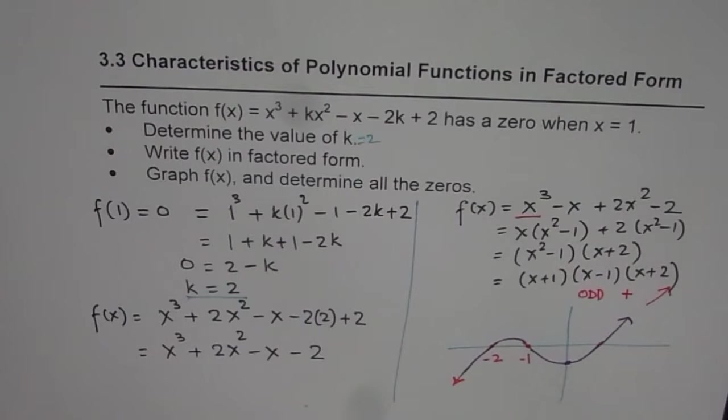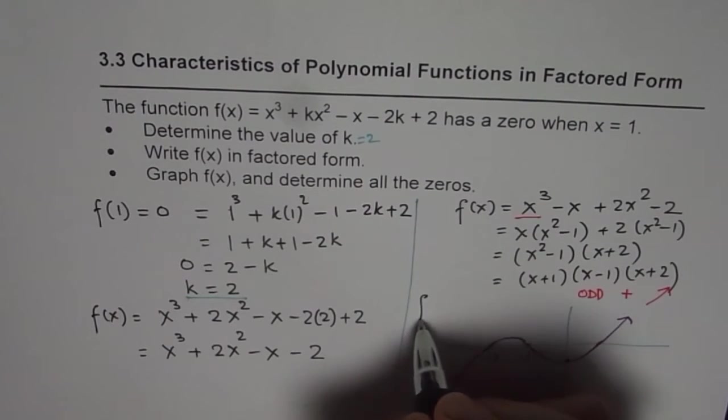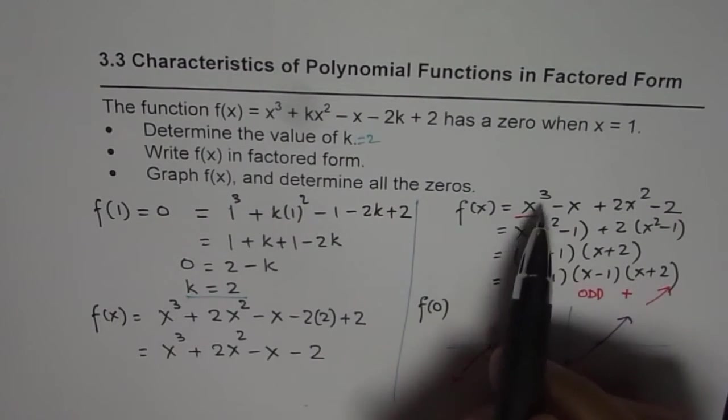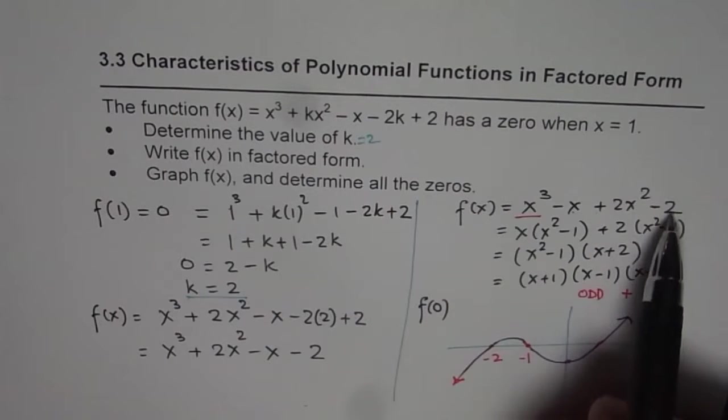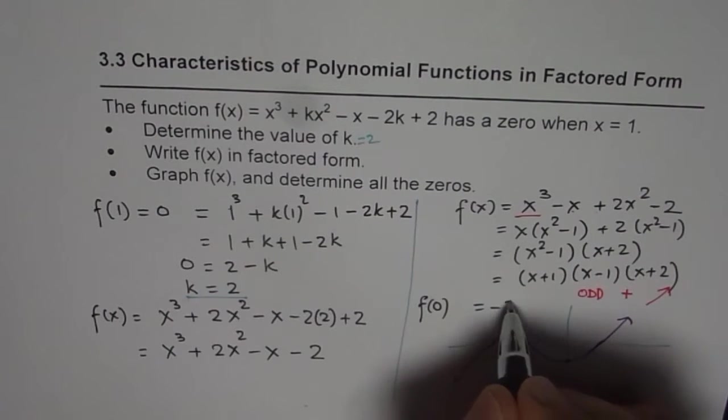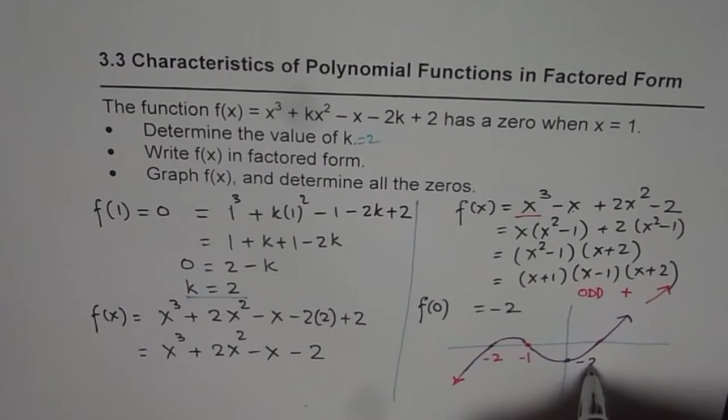Now what is y-intercept? So we should find y-intercept is f(0). So write 0 for x. When you write 0 for x, you get this constant, which is minus 2. So write this as minus 2.